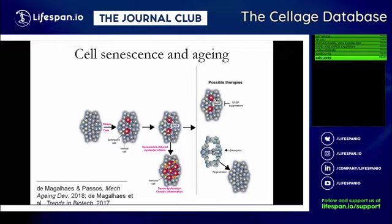Normal human cells can only divide a certain number of times. The hypothesis is that there's an accumulation of senescent cells in tissues with age, either because of replicative senescence or stress-induced senescence. This results in a disruption of tissue function and an increase in chronic inflammation, also because senescent cells secrete inflammatory cytokines — what's known as SASP, the senescence-associated secretory phenotype — which is thought to contribute to chronic inflammation, which increases with age.